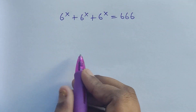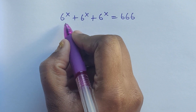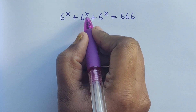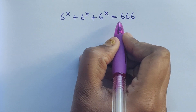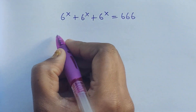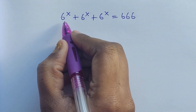Hello everyone, welcome back to my channel. How do we solve this: six to the power of x plus six to the power of x plus six to the power of x equal to 666? Let's see.